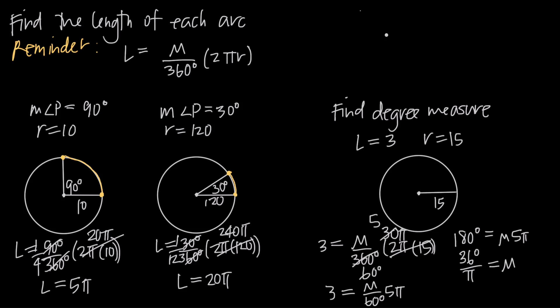We could go ahead and put in the line here — it's going to be a very small angle, maybe something like this — and this will be the arc here. We can indicate the arc, and we could write in that 36 degrees over π is approximately the degree measure of the arc.